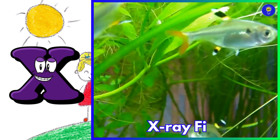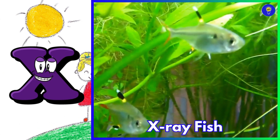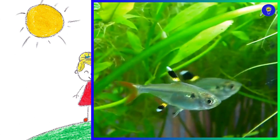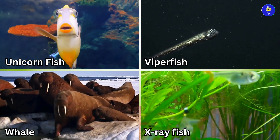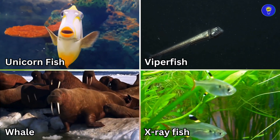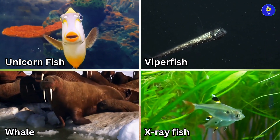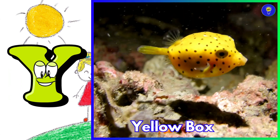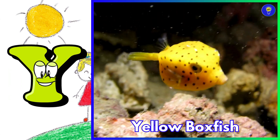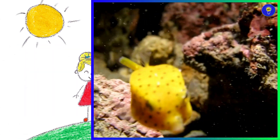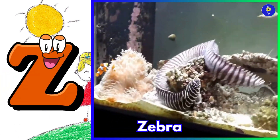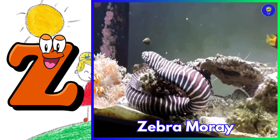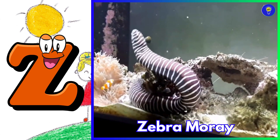X is for x-ray fish. Y is for yellow boxfish. Z is for zebra moray.